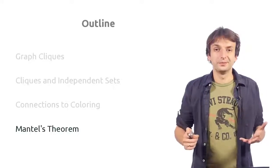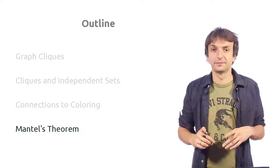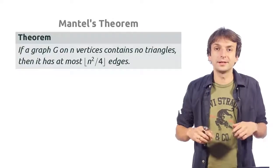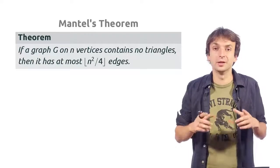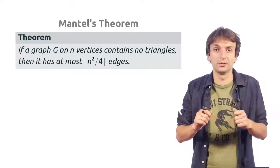Now we'll prove Mantel's theorem. Recall that a triangle is a clique of size 3. Mantel's theorem says that a graph on n vertices without triangles can only have at most floor of n squared over 4 edges.